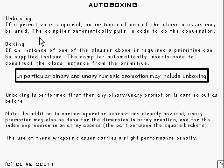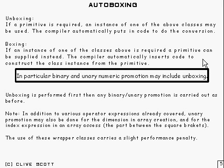What is unboxing? Well, it's pretty simple. If you need a primitive type somewhere, you can use an instance of one of the above classes in its place — the compiler automatically puts in code to do the conversion. And for boxing, that's pretty simple as well: if you need an instance of one of those classes, you can use a primitive type instead, and the compiler automatically inserts code to construct the class from the primitive. It's worth mentioning that binary and unary numeric promotion can include a preliminary unboxing stage — unboxing is performed first, and then you can do binary and unary promotion.